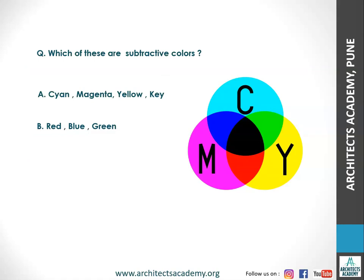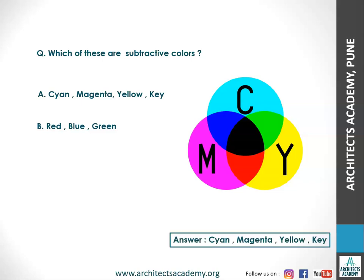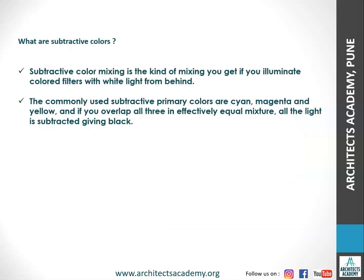Next question: which of these are subtractive colors? The right answer is Cyan, Magenta, Yellow, and Key — Key being black. Subtractive color mixing is the kind of mixing you get if you illuminate colored filters with white light from behind. The commonly used subtractive primary colors are Cyan, Magenta, and Yellow. If you overlap all three in equal measure, all the light is subtracted, giving black. That's the concept of subtractive colors.